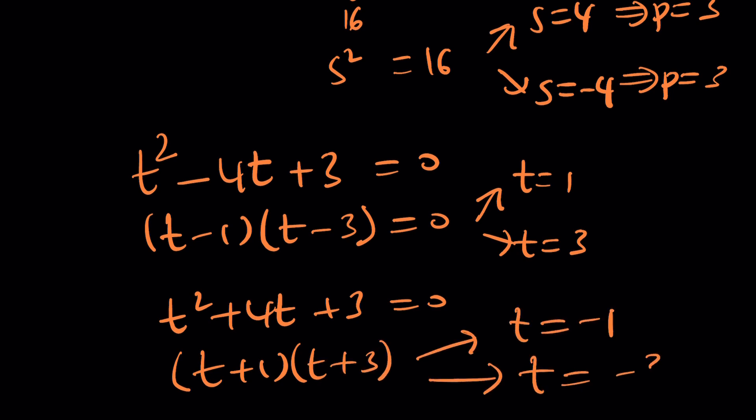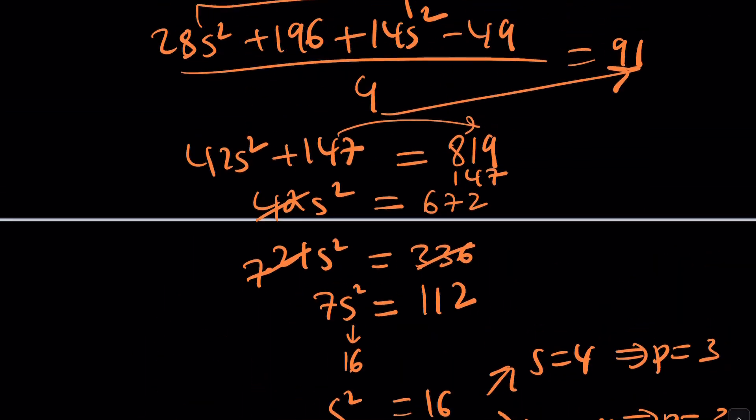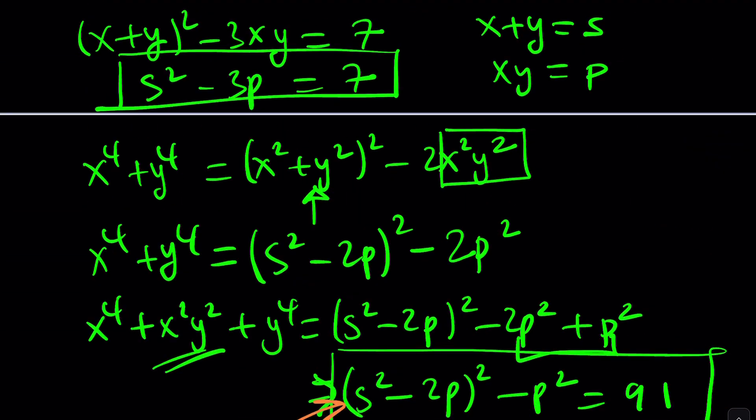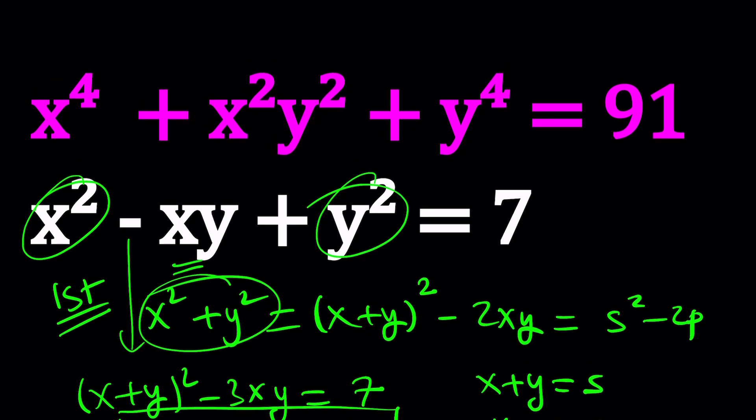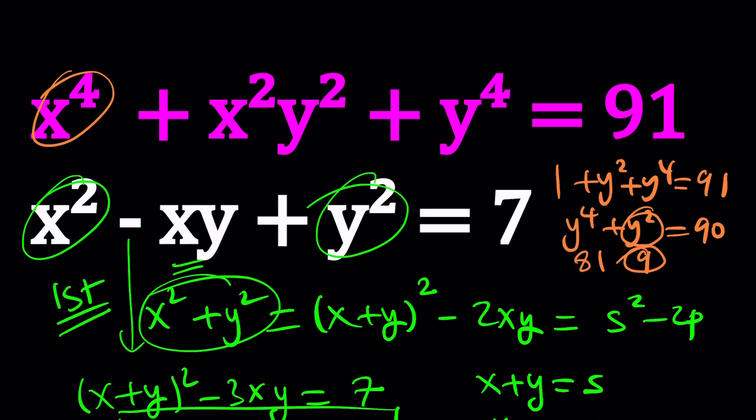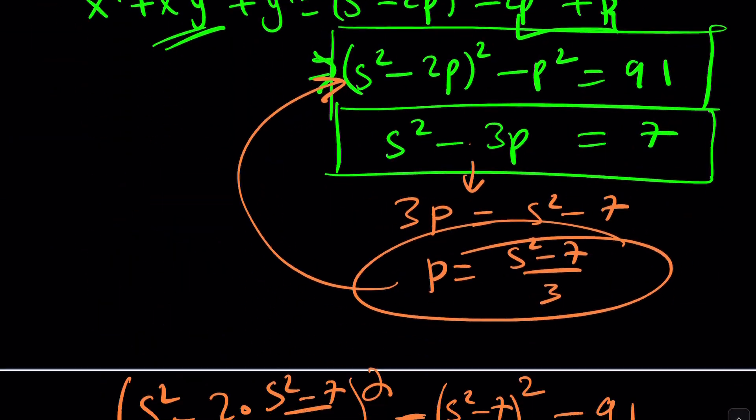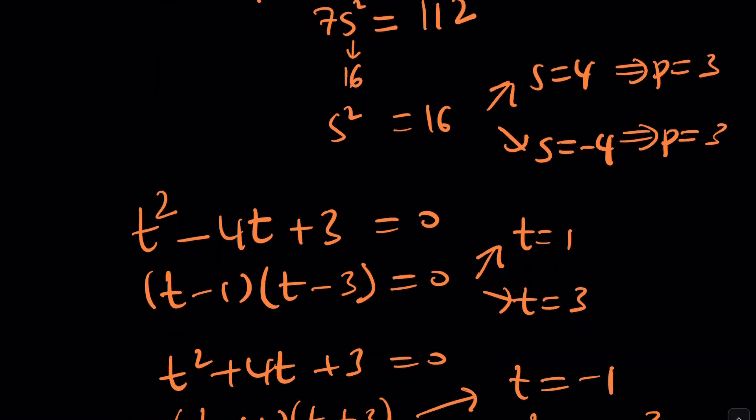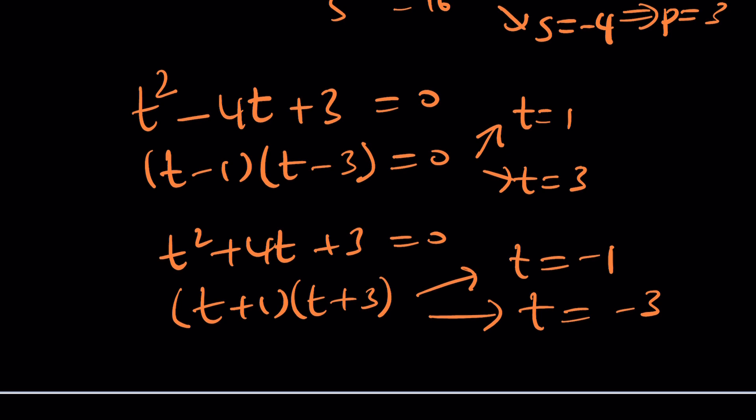Now what does this mean? Let's talk about it. So for example, if X equals 1 is a solution, in other words, if you look at the original problem, if X is 1, then you're going to get 1 plus Y squared plus Y to the fourth equals 91. And this will give you Y to the fourth plus Y squared equals 90. Now can you find a number that satisfies it? Yes, 81 and 9. So that means Y squared is 9, which means Y is equal to plus minus 3. In other words, if X is 1, then Y is plus minus 3 and vice versa. Okay, you get the idea? So that's how it works. You can switch around.